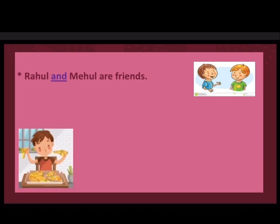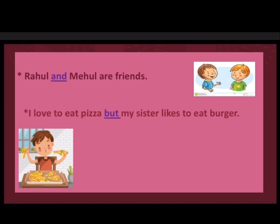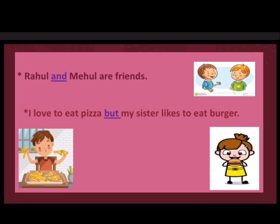Let us look at another example. I love to eat pizza, but my sister likes to eat burger. Here, 'but' is a conjunction and it has joined two groups of words: 'I love to eat pizza' and 'My sister likes to eat burger.'